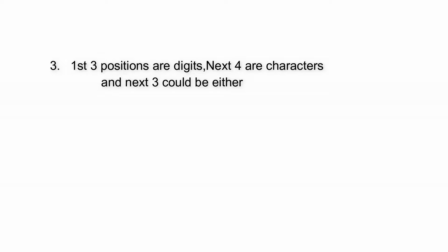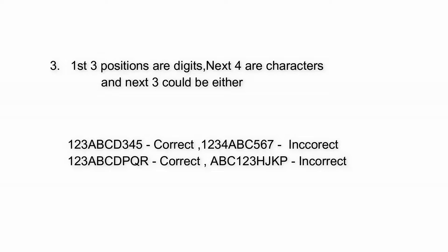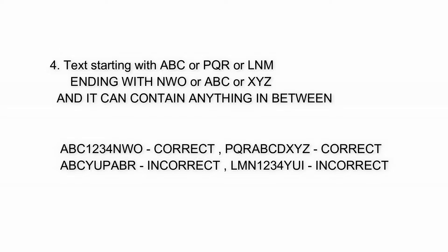In the third question, we have a column with random values but we are only interested in values where the first three positions are digits, the next four are characters, and the next three could be either digits or characters — so we only want values matching this pattern. In the fourth question, we want to identify patterns that start with ABC, PQR, or LNM and end with either NWO, ABC, or XYZ, and they can contain anything in between.